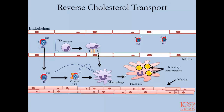The reverse cholesterol transport system is very important because macrophages and foam cells both produce the ABC transporters required for HDL to remove cholesterol ester and return it to circulation for removal at the liver. Both macrophages containing high levels of cholesterol and foam cells are capable of removing this cholesterol and exporting it via HDL back to the liver.